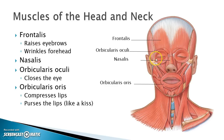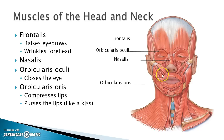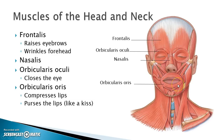Now the orbicularis oculi and orbicularis oris. Orbicularis means going around in a circle. Oculi is for the eye, oris is for the mouth. So when you contract the orbicularis oculi, it closes the eye. If you contract the orbicularis oris, you compress or purse the lips like you're going to kiss someone.